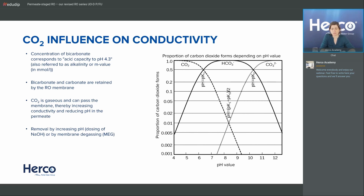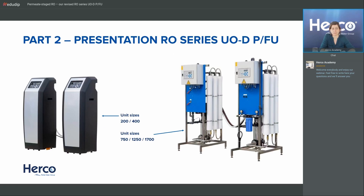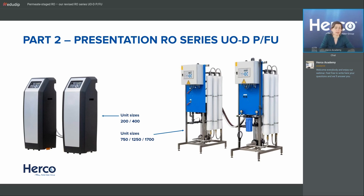Now we jump right into the units — part two — the new RO series. You can already see it looks a bit different from the old one. We have two types of sizes: on the left you see the 200 and 400 liters per hour units, and on the right you see the 750, 1250, and 1700. We changed the unit sizes from our catalog — I'll explain why shortly. The smaller units have a cover, and we also have differences with the pump and a few other features.